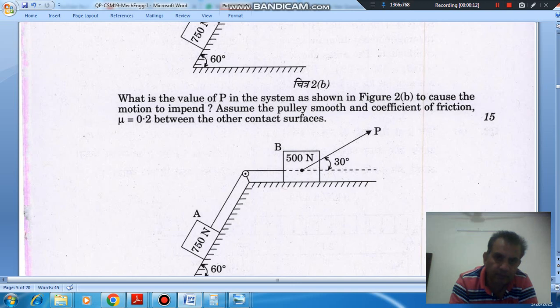What is the value of P in the system as shown in figure 2B to cause the motion to impend? Assume pulley smooth and coefficient of friction is equal to 0.2 between the other contact surfaces.